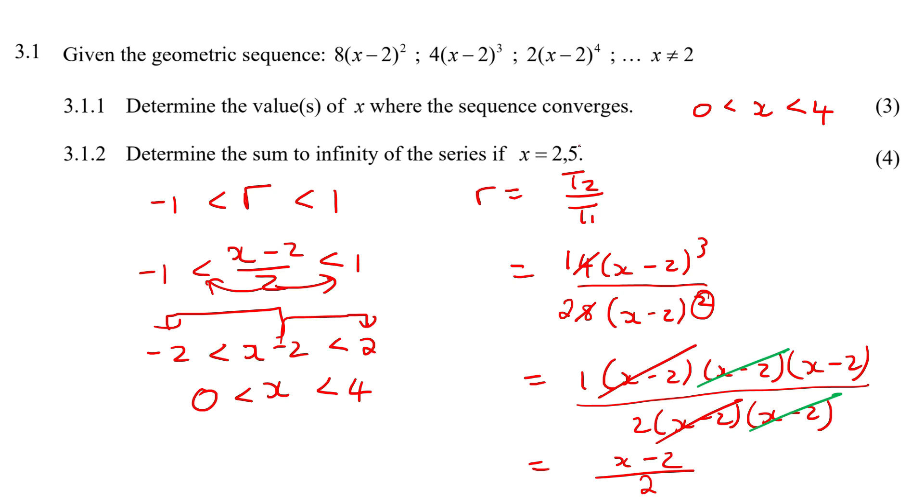They're saying now that if X is 2.5, calculate the sum to infinity. Okay, so we know that the sum to infinity formula is a very easy formula to use, which just goes A over one minus R. Okay, so A is term number one, which is this one over here.